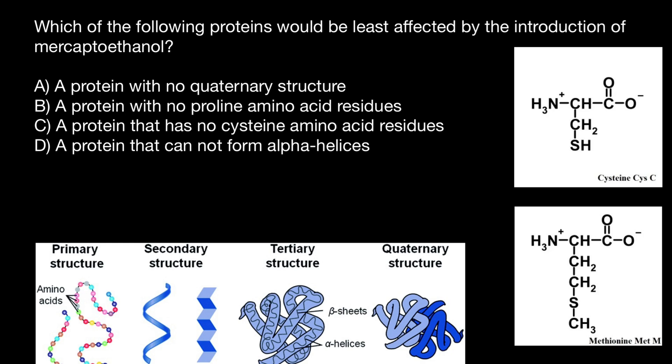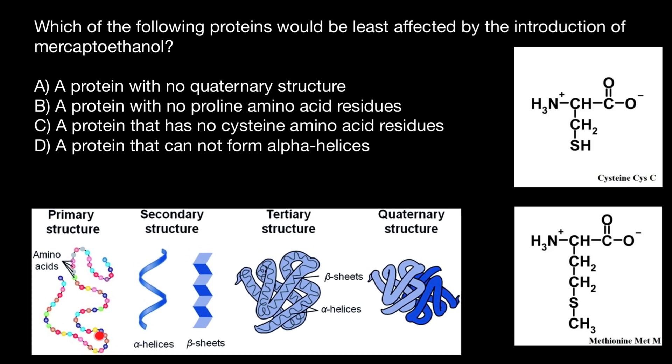Now let's take a look at this picture. You can see here primary structure, secondary structure of the protein, tertiary structure, and quaternary structure. Primary structure is basically just a sequence of the amino acids, and that's it.